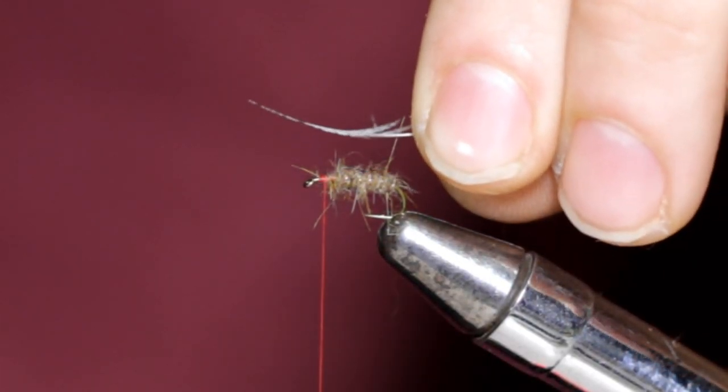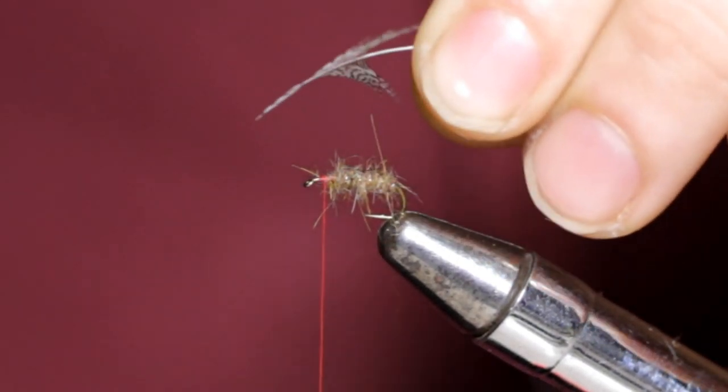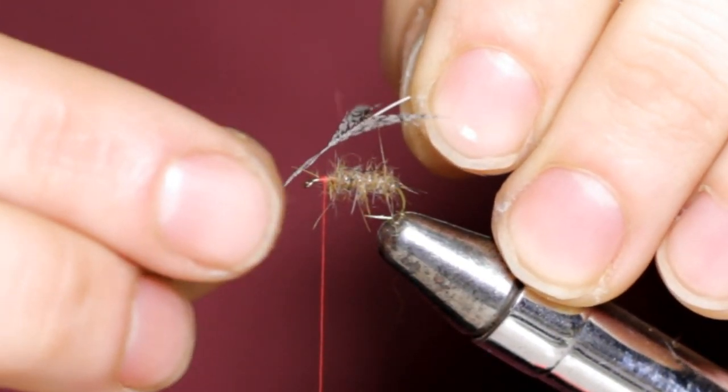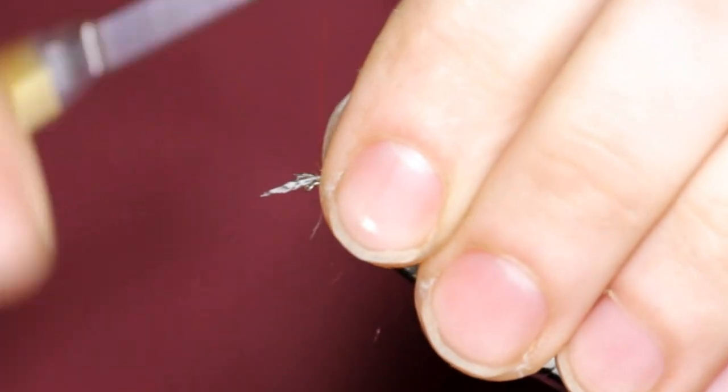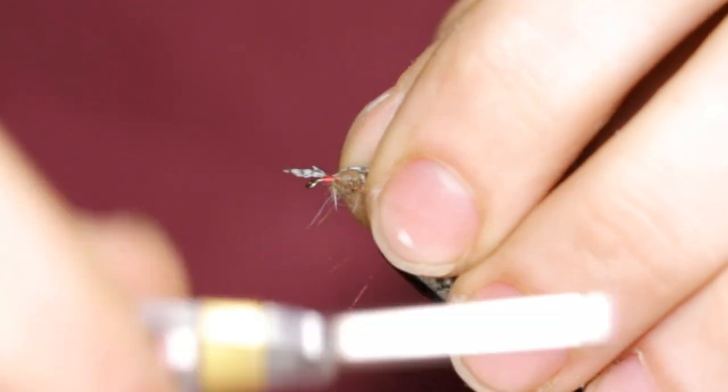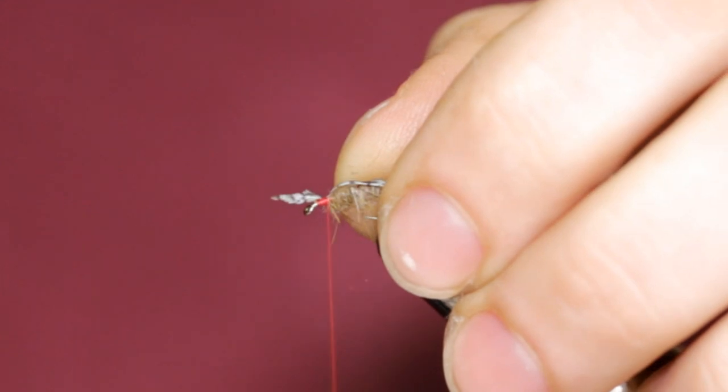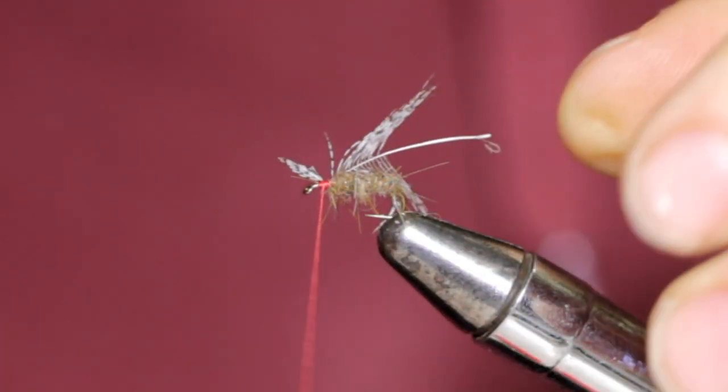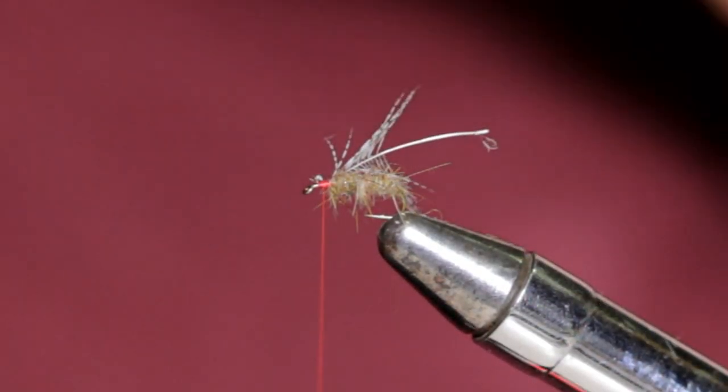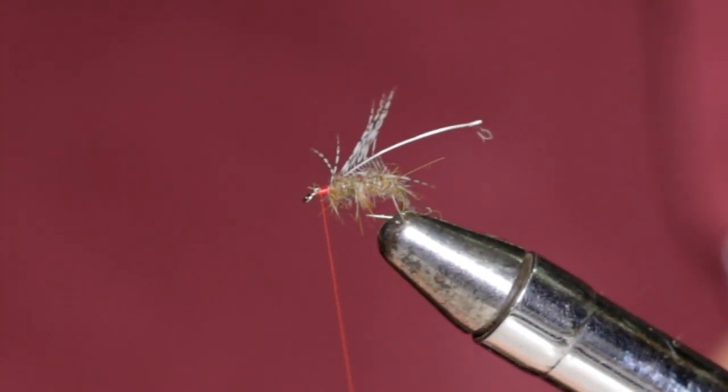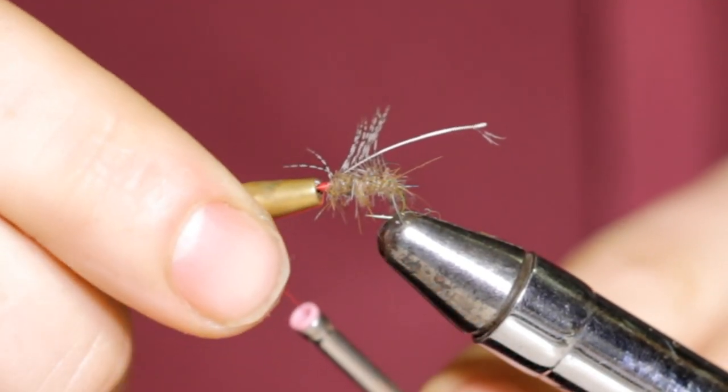Now this feather does have a curve. Here you can see it goes upwards, and here downwards. I'm going to tie it in like this, downwards. Set it on top, take some turns over it. Now we'll snip off the waste. And I'm going to throw a half hitch in here so that nothing comes unraveled while I'm wrapping my hackle.